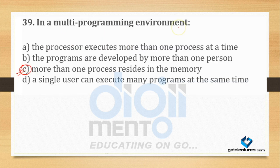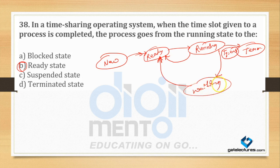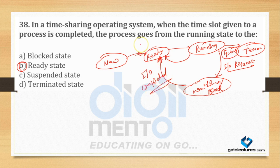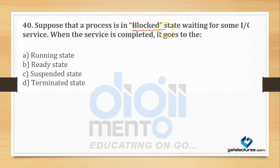Suppose a process is in the blocked/waiting state, waiting for some I/O service. When the I/O service is completed, it goes to which state? It says: if there is a process in waiting or block state, and it was in running state waiting for some I/O service, once that I/O device completes its work, it goes to the ready state.